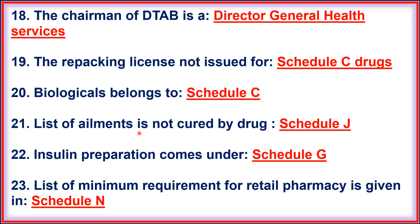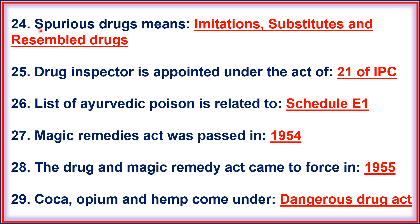21. The list of elements not cured by the drug comes under Schedule J. 22. Insulin preparation comes under Schedule G. 23. List of minimum requirements for retail pharmacy is given in Schedule L. 24. Spurious drugs means imitations, substitutes, and resembled drugs. 25. Drug inspector is appointed under the Act of Section 21 of IPC.